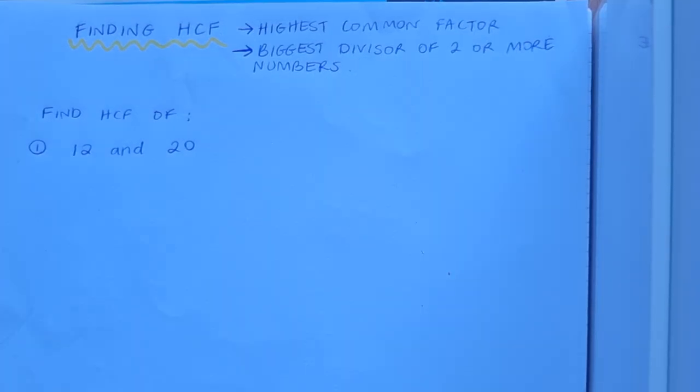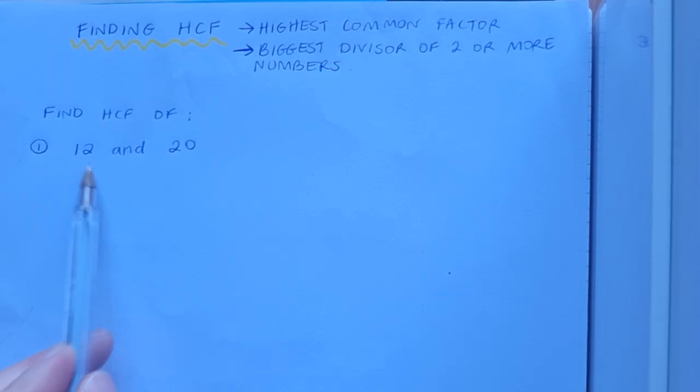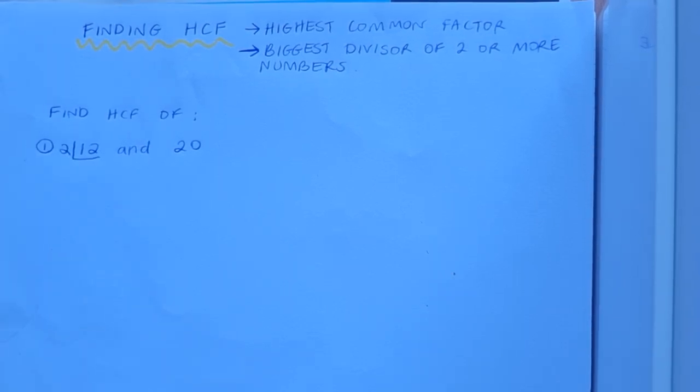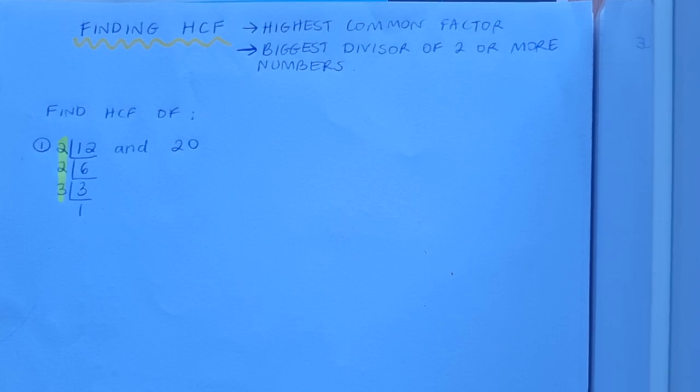The first thing I'm going to have to do is find the prime factors of both of these numbers. So I'm starting with 12. I can divide by 2, I can divide by 3. Remember when I get to 1 I'm done. There are my prime factors down the left hand side.